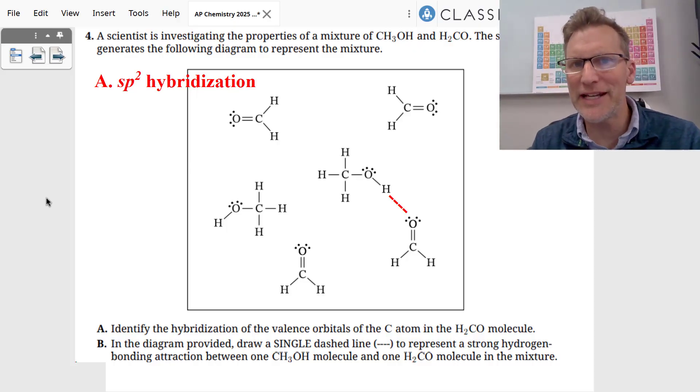Here we're taking a look at CH3OH and H2CO, and they want to know the hybridization of the carbon atom in the H2CO. Look at its bonding sites. There's three bonding sites, so it's SP2 hybridized.